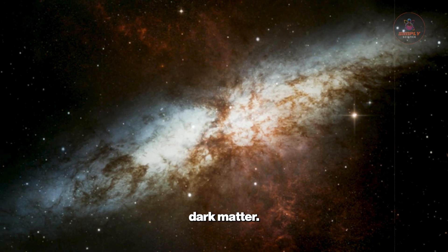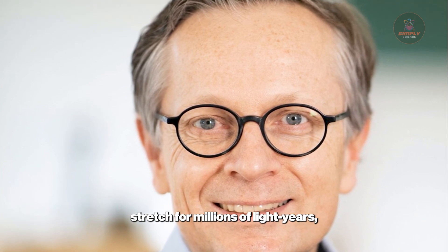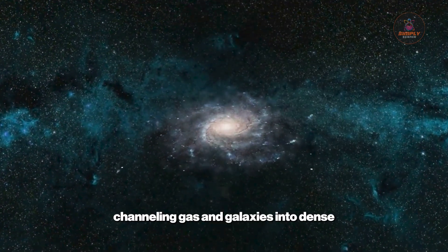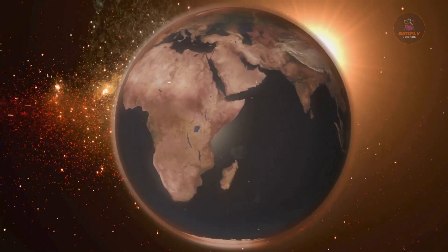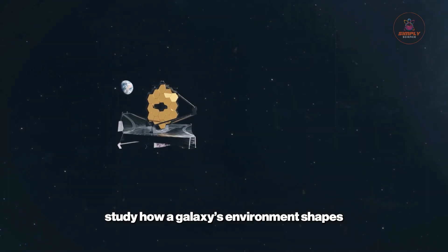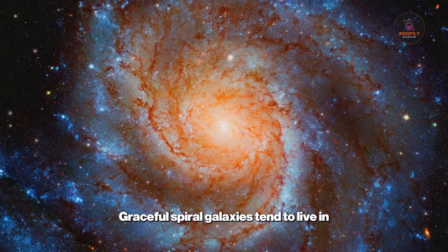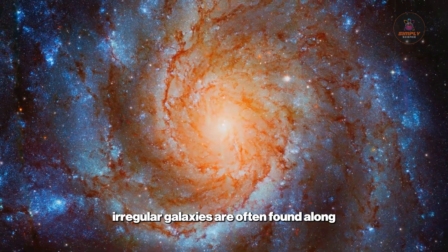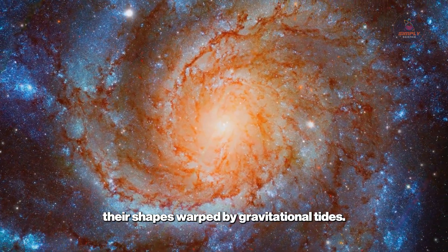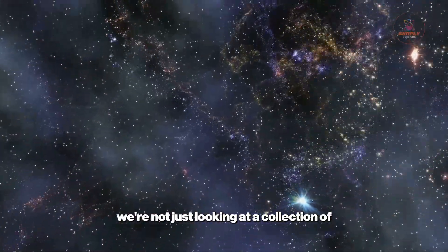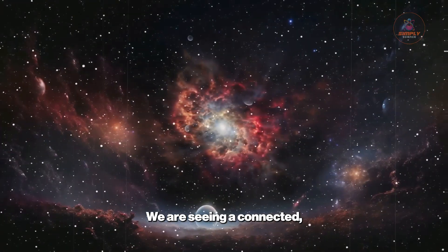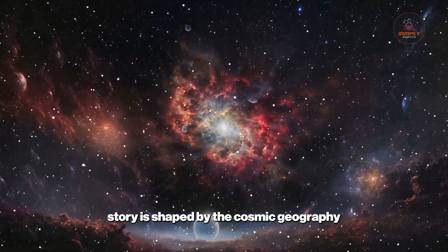As shown in simulations by cosmologists like Volker Springel, these sprawling dark matter structures stretch for millions of light-years, dictating the fates of the galaxies within them. The filaments act as cosmic highways, channeling gas and galaxies into dense intersections where clusters form. Voids, on the other hand, are vast empty regions where galaxies can drift for billions of years without encountering a neighbor. This new atlas allows astronomers to study how a galaxy's environment shapes its life. Graceful spiral galaxies tend to live in quieter areas, while distorted, irregular galaxies are often found along crowded filaments, their shapes warped by gravitational tides. For the first time, we're not just looking at a collection of island universes—we are seeing a connected, evolving landscape where every galaxy's story is shaped by the cosmic geography around it.